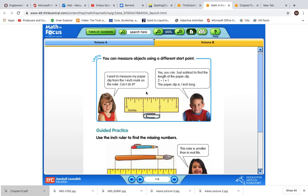So this little girl here is saying, I want to measure my paperclip from the one inch mark on the ruler. Can I do it? And the boy answers, yes, you can. Just subtract to find the length of the paperclip. Two minus one equals one. The paperclip is one inch long. So because you're starting at the one inch mark and ending at two, subtract the numbers two minus one equals one. The paperclip is one inch long. It is not two inches because we did not start at the beginning of the ruler.